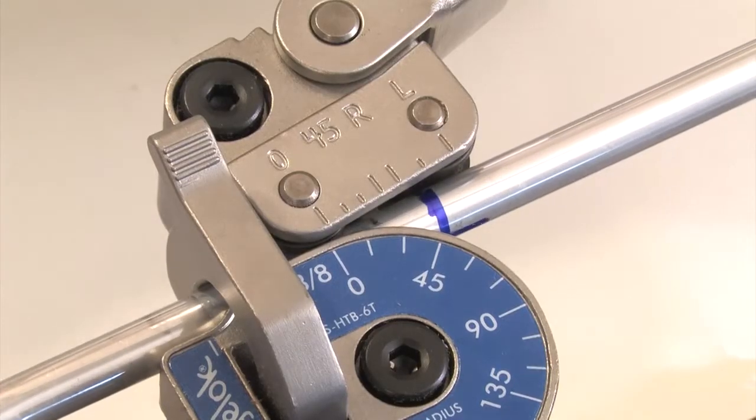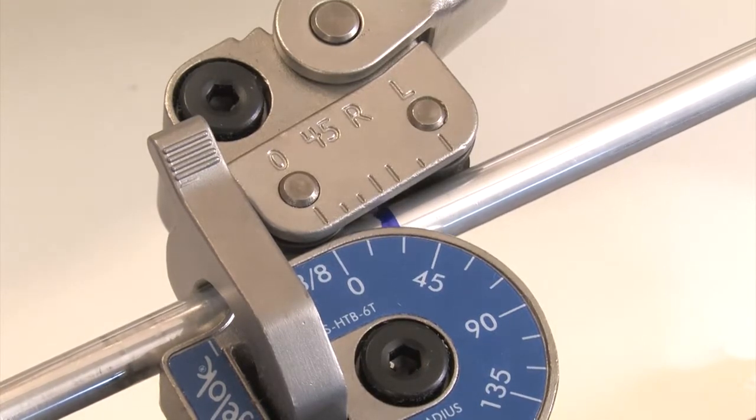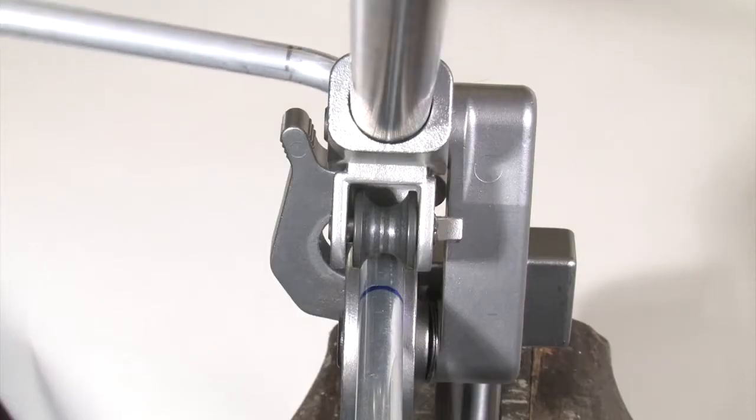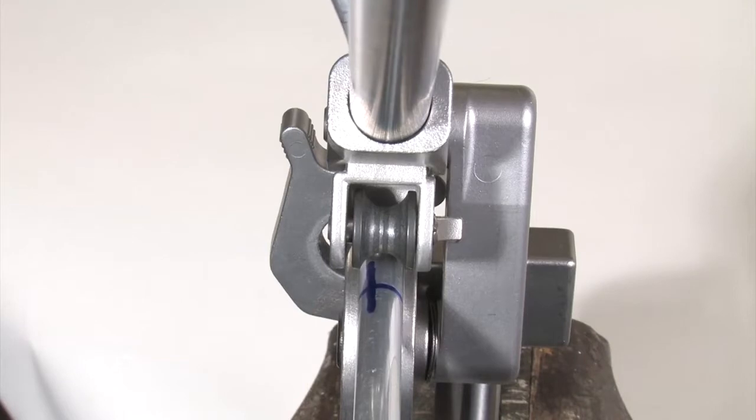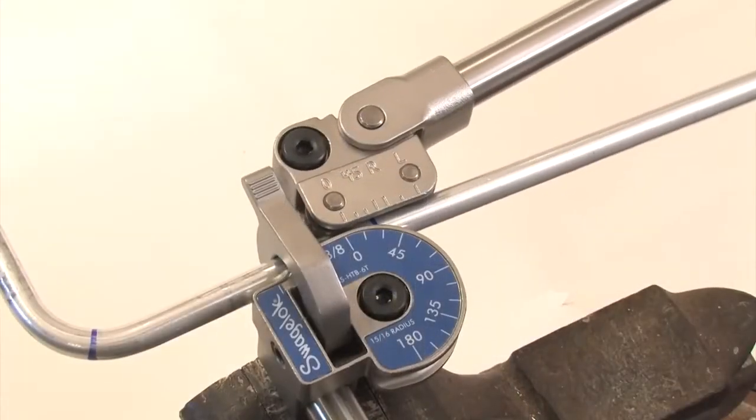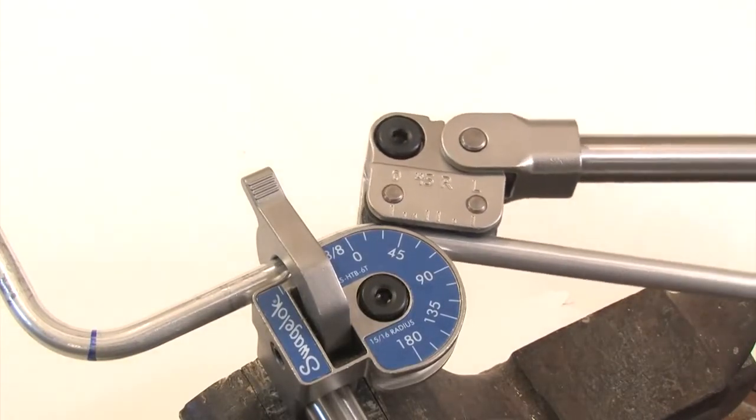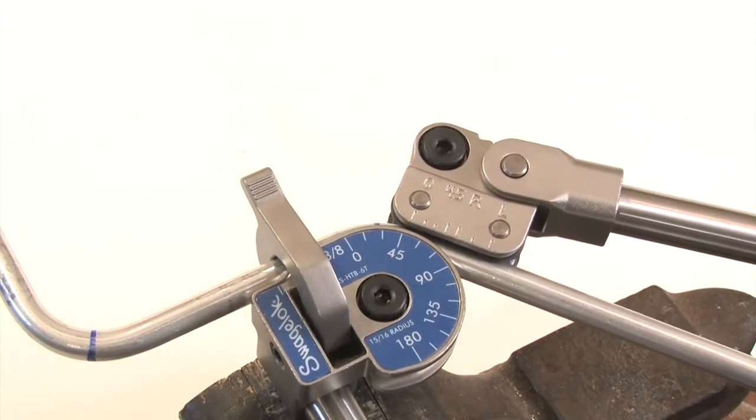Line up the bend mark with the 45 degree mark on the top scale. Rotate the tube until the directional mark lines up with the short handle. Make the second bend to 45 degrees and correct for spring back if necessary.